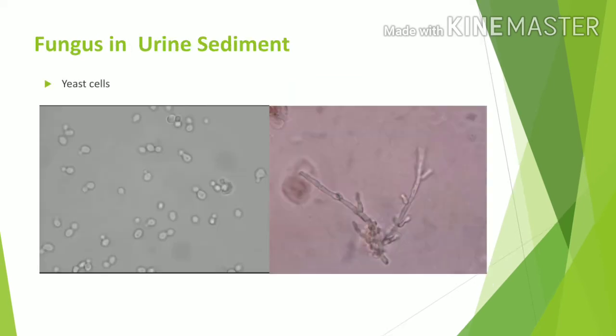Then fungus in urine. The first picture shows a moderate number of budding yeast cells. The second picture shows a single hyphae seen in this field.